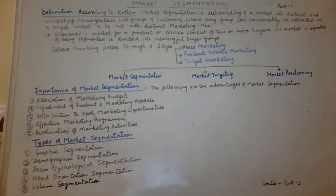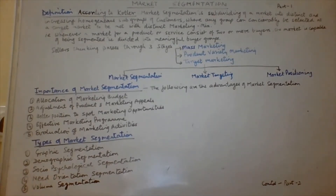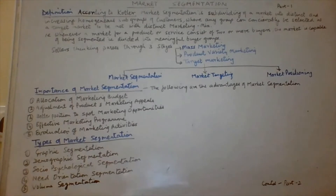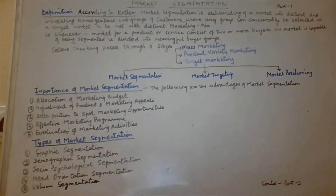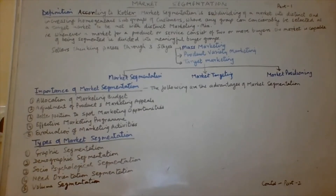The first is geographic segmentation — segmenting on the basis of geography, maybe a country or city. For example, on the basis of national boundaries, we can divide into north, south, east, and west. In the case of Indian Railways, the total country has been divided into five major segments: eastern, northern, southern, western, and central railway. Geographic segmentation can also be based on cities.